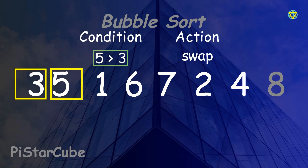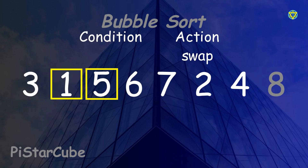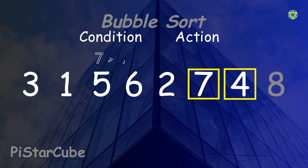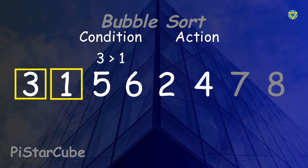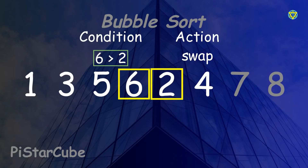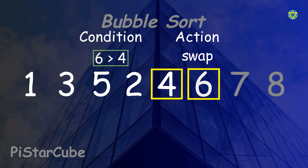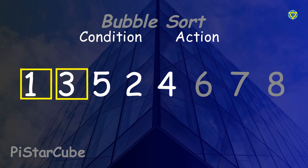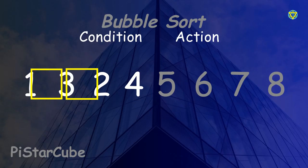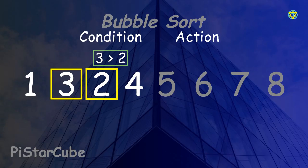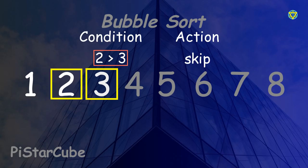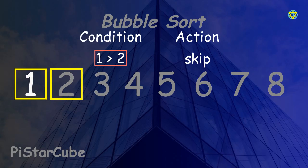Now let's speed it up a little to finish sorting the rest of the array. We just keep repeating the same steps — comparing adjacent elements and swapping them if needed. After each full pass through the array, the largest unsorted number settles at its correct position at the end, as we see with number 8. With every round, the number of comparisons gets smaller because the biggest elements are already sorted. We keep going until no more swaps are needed, and that's when we know the list is completely sorted.